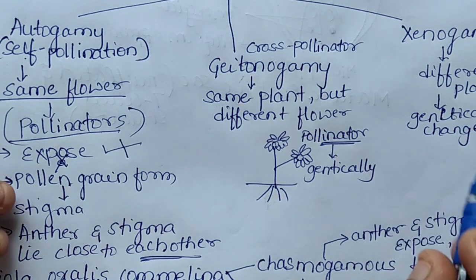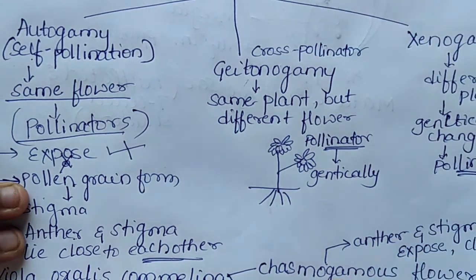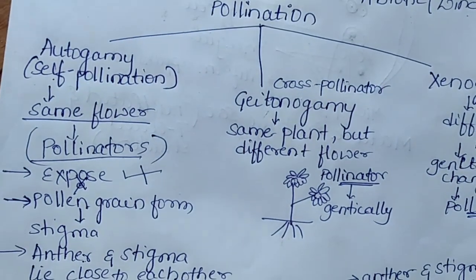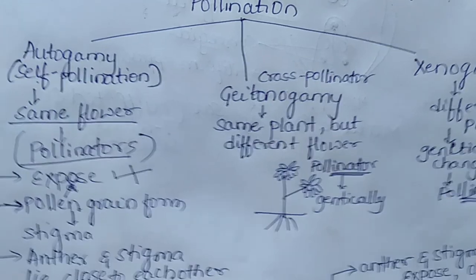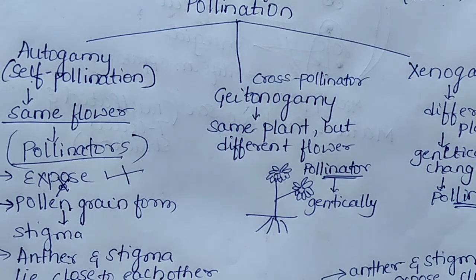Pollinators are required in case of xenogamy. So this is about pollination. I hope you have understood today's topic, that is pollination. In the next video, we will discuss about the agents of pollination. Thank you dear students.